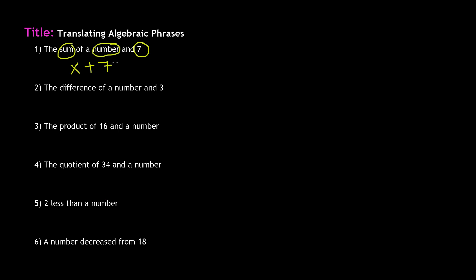As you can see, it's pretty basic. Number two: the difference of a number and three. We circle or underline our key terms: difference, which tells us we'll be subtracting; number, which means we'll use a variable; and three. Difference means subtracting, so we put a subtraction sign. A number — I'll keep using x — and three. To translate 'the difference of a number and three,' we write x minus three.